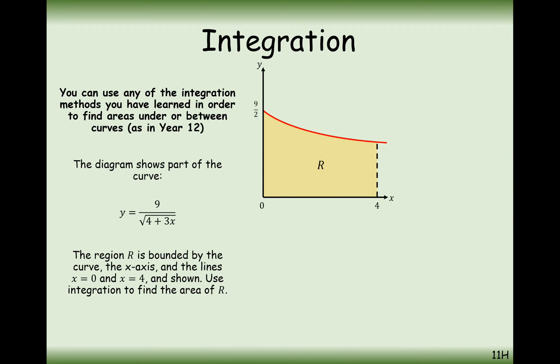So we saw this at the end of the lower sixth year, but here we're just going to be doing it with harder integrals. In this first case we've got y equals 9 over the square root of 4 plus 3x. We have a boundary between 0 to 4 on the x-axis, and we're asked to find the area underneath the curve that's bounded by the curve line, the x-axis, and those two boundary lines of 0 and 4.